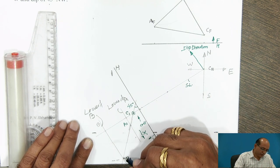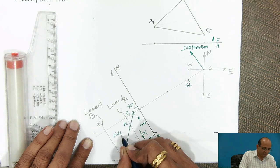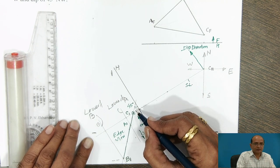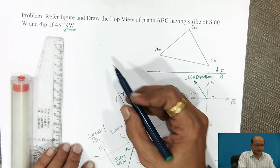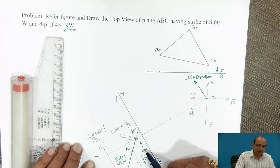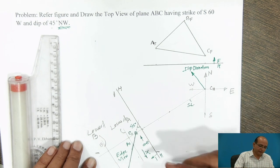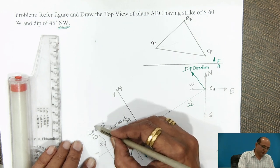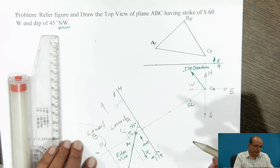The line from B1 to C1 is the edge view of the plane, drawn at the dip angle of 45 degrees. The dip direction considered is north-west, so the plane has downward inclination from north to west in this direction. If the edge view were completed in the opposite direction, that would be wrong because the plane would be going upward instead of downward.